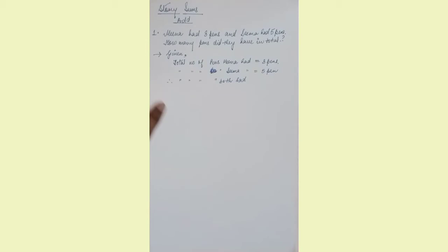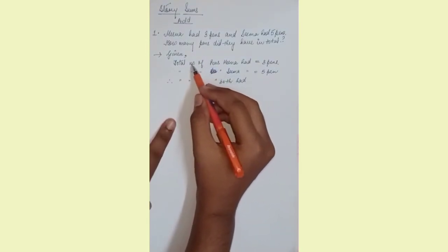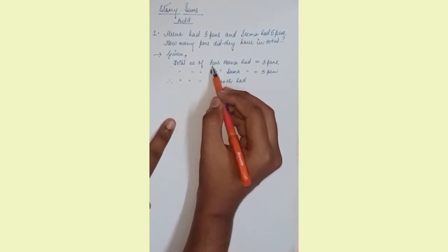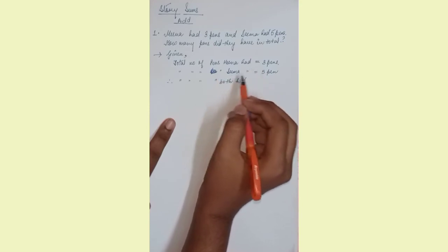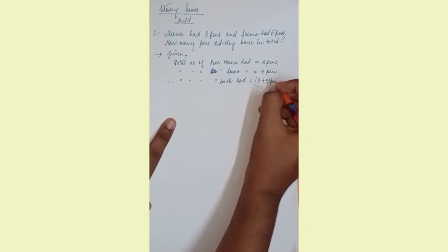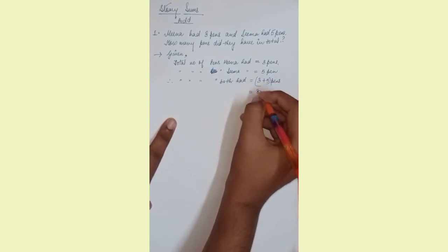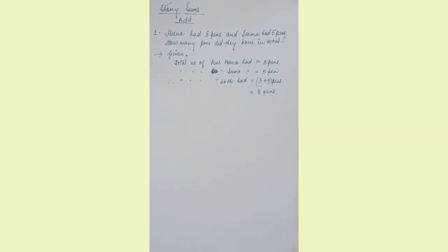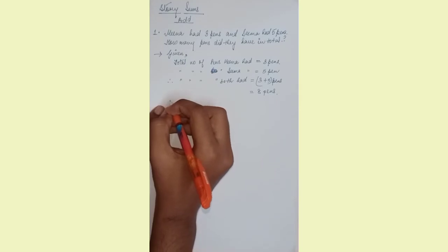Therefore, total number of pens both had. Here you can directly write in the first two sentences pens Meena had, pens Sima had. So three plus five pens, you'll get eight pens. Like this we usually do this type of sums.